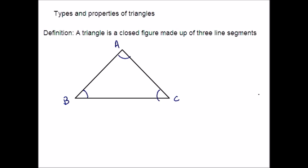Let me start with the definition. A triangle is a closed figure made up of three line segments. The triangle consists of three line segments and three angles. In this figure, the sides AB, BC, CA are the three line segments and the angles A, B, C are the three angles.